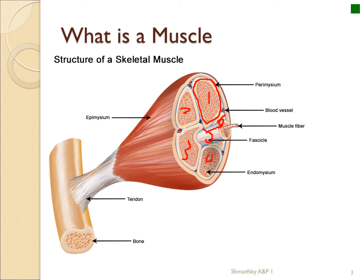Each fascicle can be composed of different types of muscle fibers, and each fascicle is individually controlled — meaning it's controlled by different nerves, sometimes even different types of nerves. This makes a muscle work either as a whole unit or a partial unit. So one fascicle can be contracting and changing that muscle's shape to produce a different movement than if all the fascicles are working together.